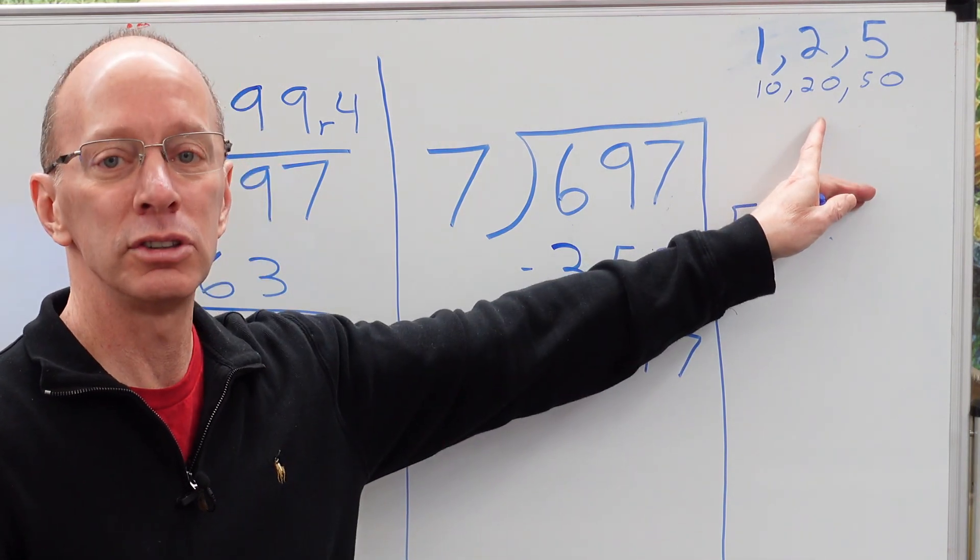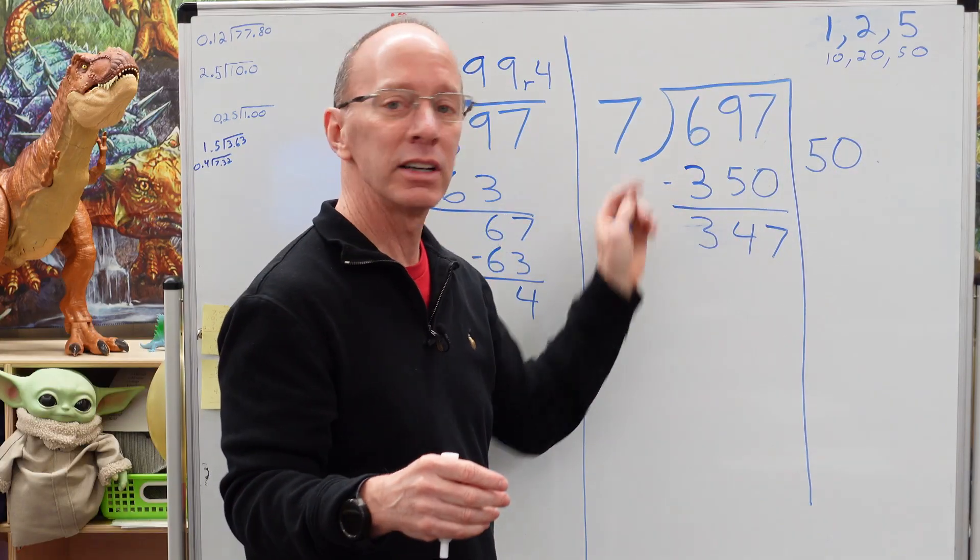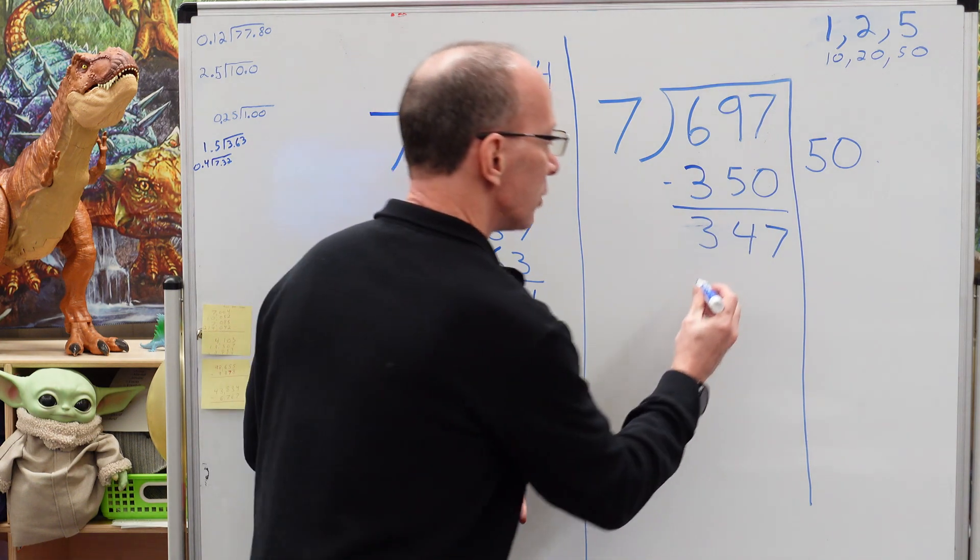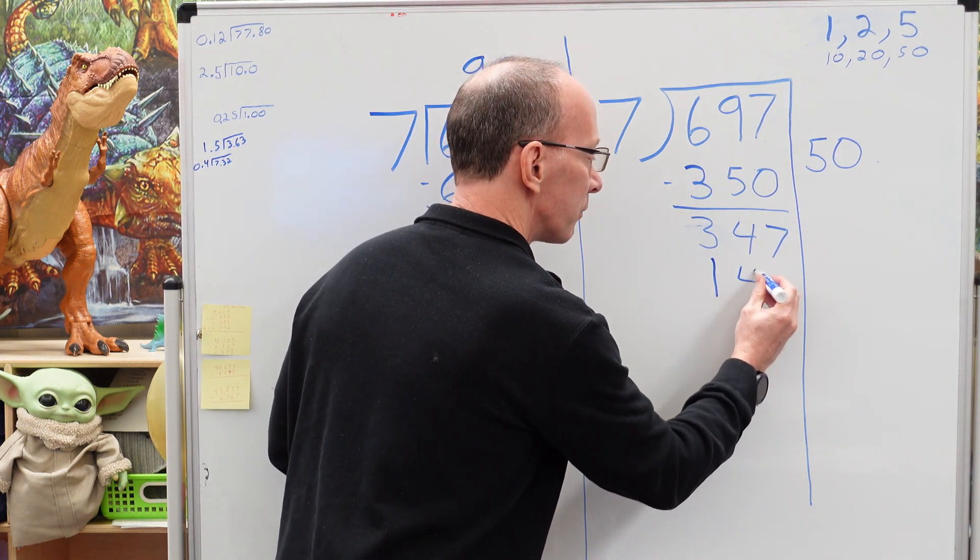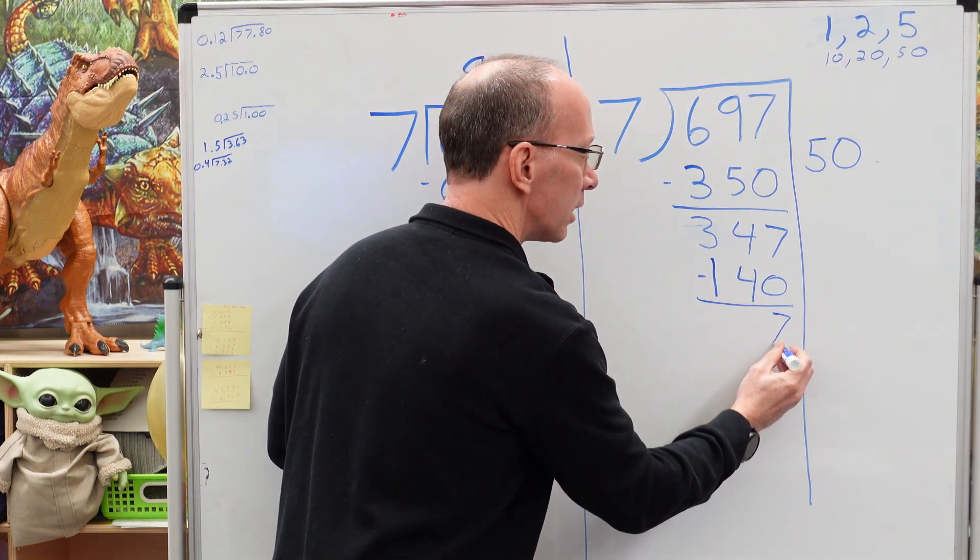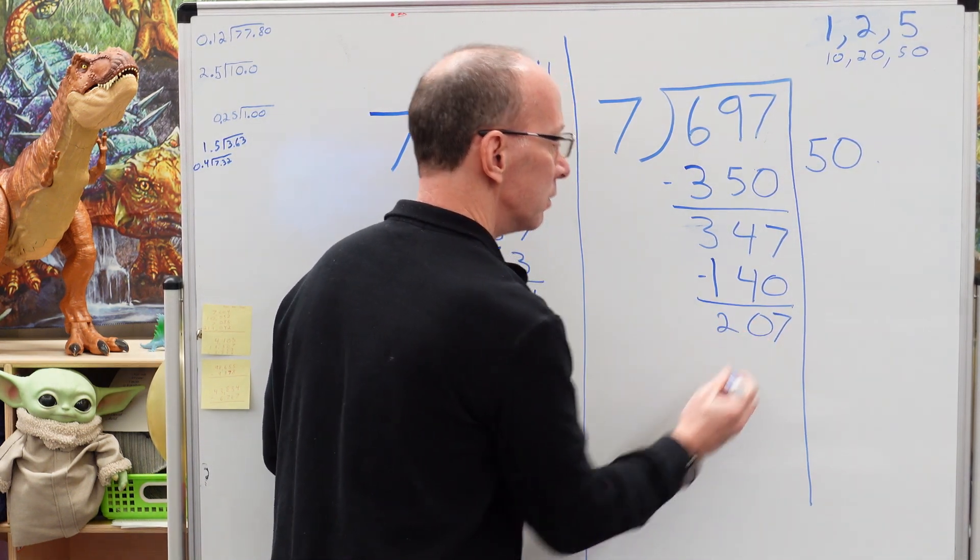So then I drop it down to 20. What is two times seven? 14. What is 20 times seven? 140. So I'm going to put 140 right here. Subtract. This is seven, zero, two.